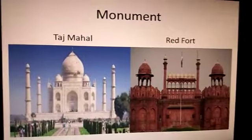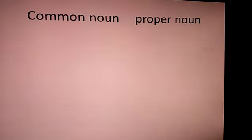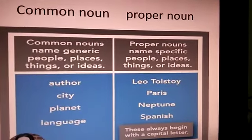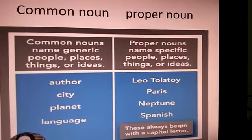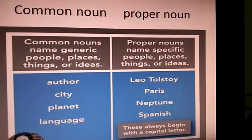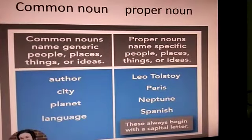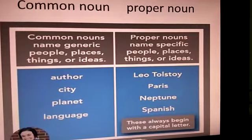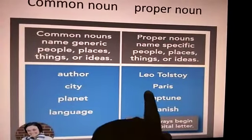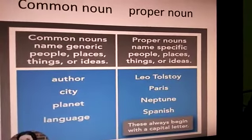Nouns can be of two types: common noun and proper noun. Common nouns are the common or generic name of people, places, things, or ideas — for example, author, city, planet, language. Proper nouns are the name of a specific person, place, or thing — for example, Leo Tolstoy, Paris, Neptune, Spanish. You can see that all proper nouns begin with a capital letter.